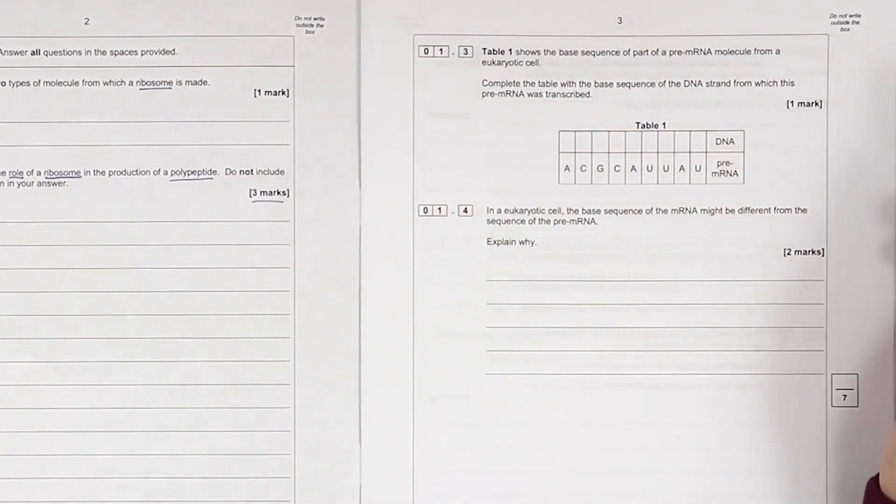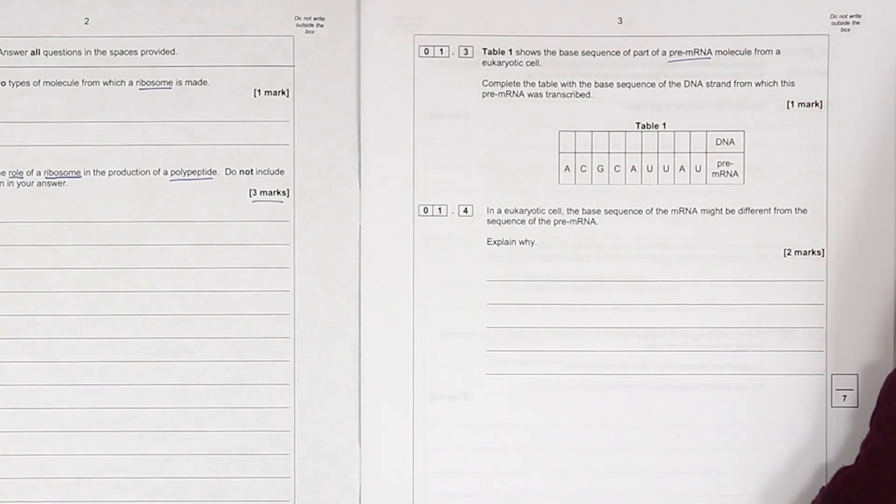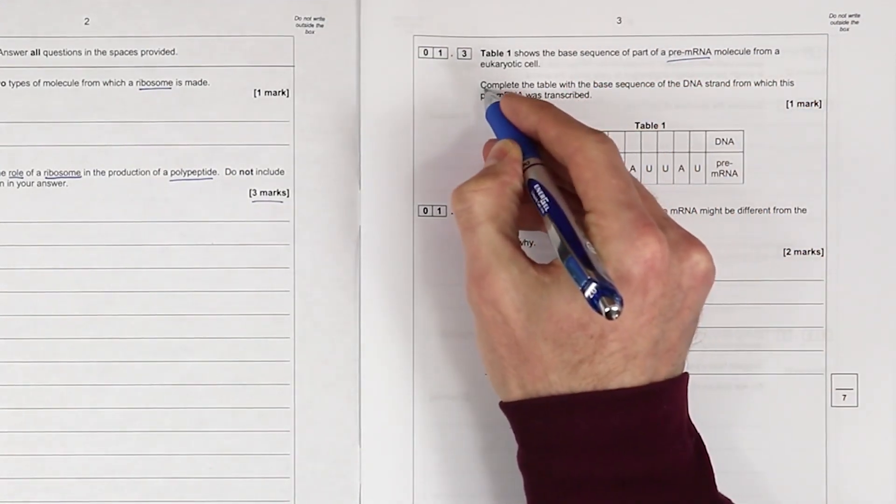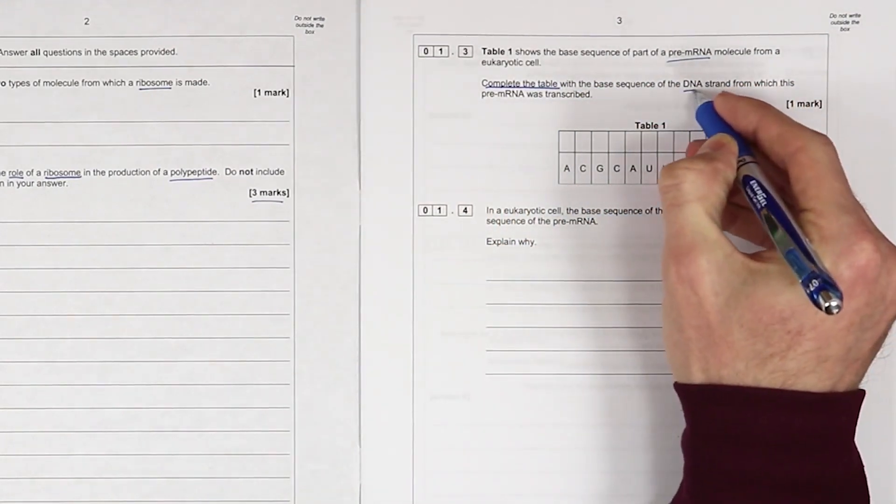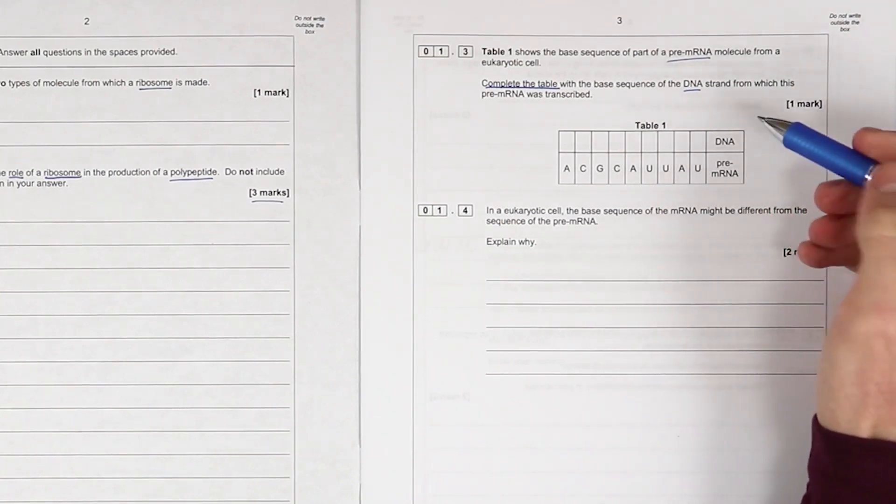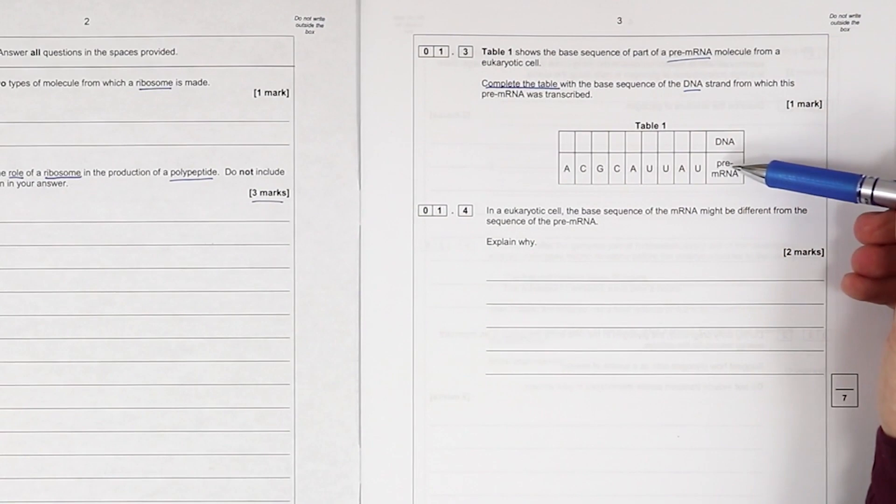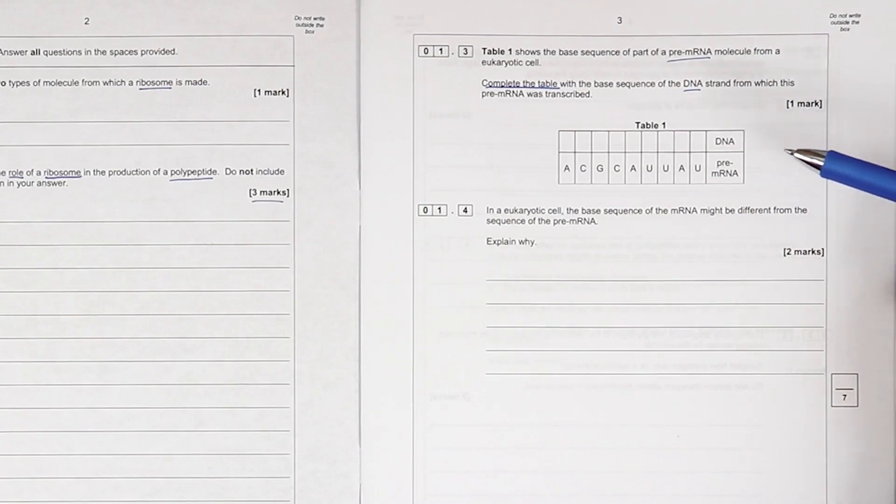1.3: The base sequence of part of a pre-messenger RNA molecule from a eukaryotic cell. Complete the table with the base sequence of DNA. Now they can ask you here for the - oh well, in fact they couldn't give you tRNA because this is pre-mRNA. But you need to be able to go from DNA to mRNA, from mRNA to tRNA, and back again in any of those combinations. So again, in practice, make sure that you'd know what the tRNA code, the sequence of bases, would be if they asked you for tRNA.